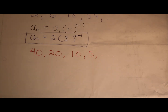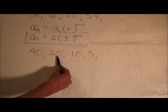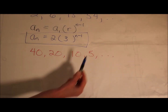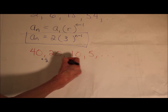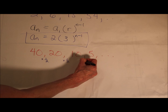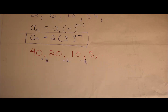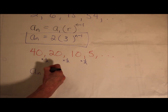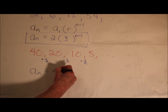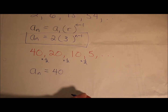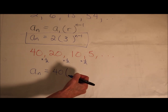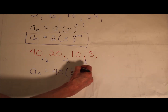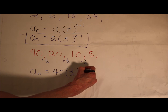Let's look at this red one. First, let's make sure it's geometric — is there a geometric pattern? Yes, indeed: times a half, times a half, times a half. So my nth term is going to be my first term times my common ratio, which is one half, raised to the n minus 1.